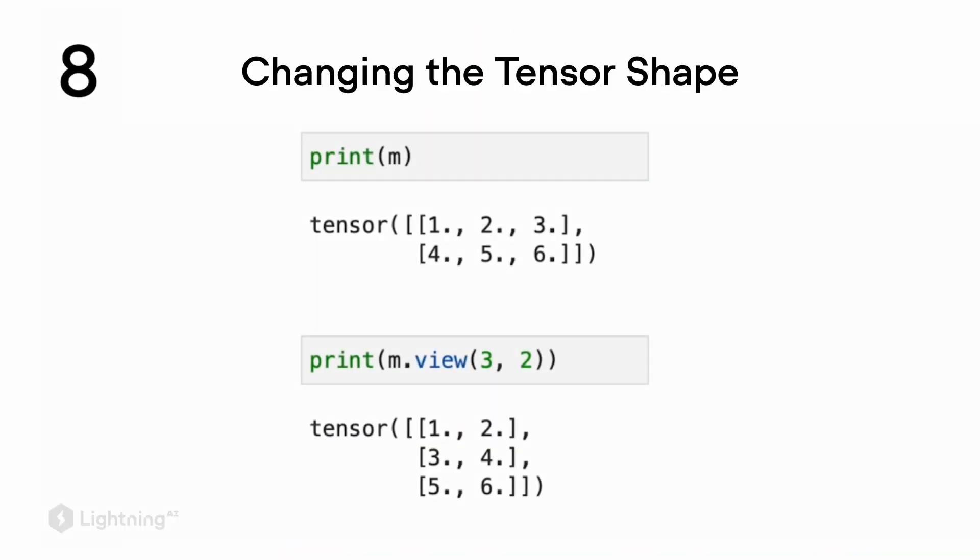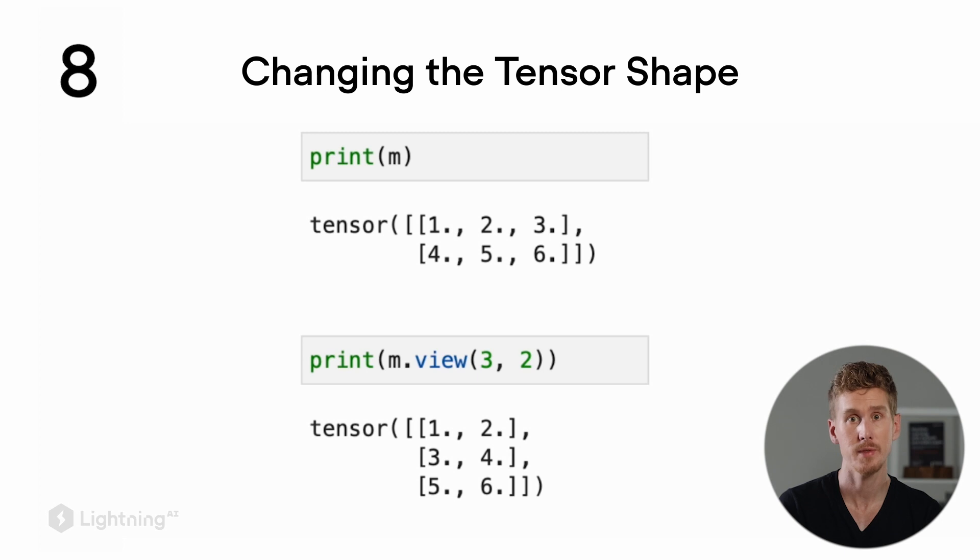Moving on from tensor types and devices, let's see how we can change the shape of a tensor. At the top, we see a 2x3-dimensional matrix. If we want to change the shape of this matrix, we can, for example, flip the rows and columns.